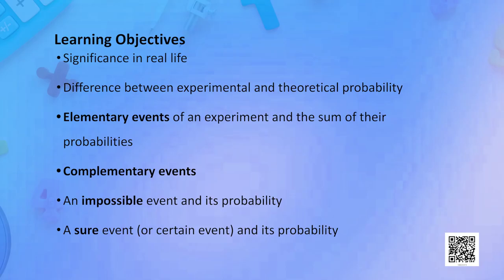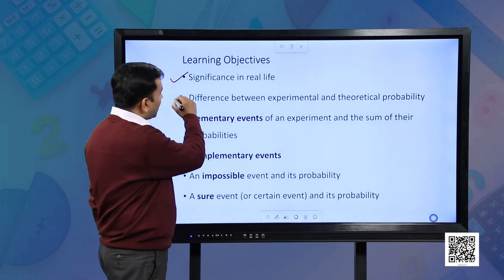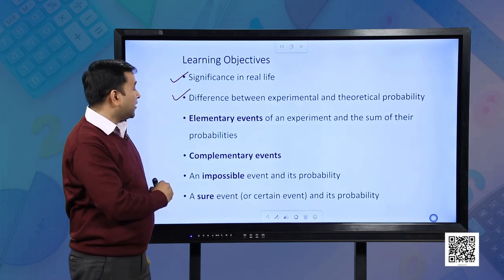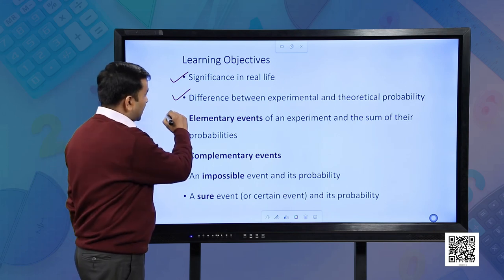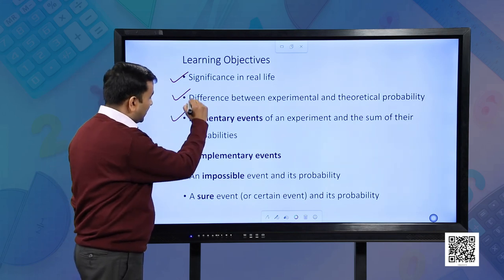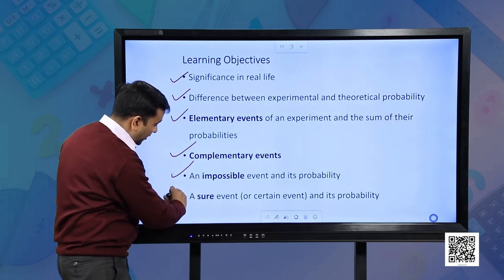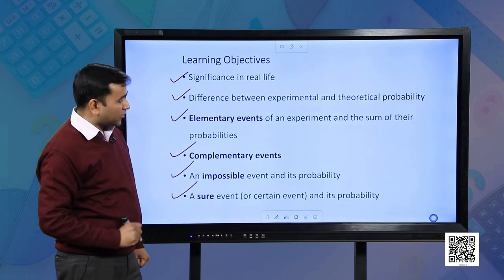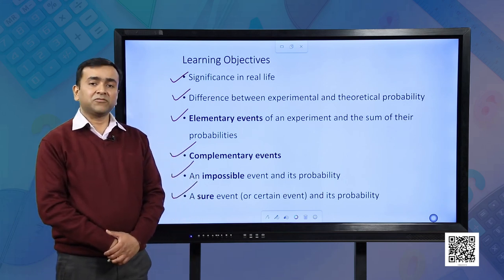In this chapter, we will extend our understanding of probability and try to learn its significance in real life. We will differentiate between experimental and theoretical probability. We will also learn some new terms such as elementary events, complementary events, an impossible event and a sure event, and find the probabilities associated with such events.